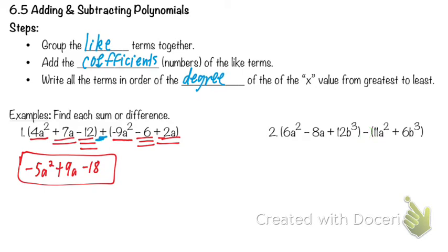There are a couple of different ways we can think about it, but before we do that, let's go through and underline. What's going to come first out of everything? We have 6a squared, negative 8a, 12b to the third, 11a squared, and 6b to the third. What's going to come first — a squareds or b to the thirds? A, because alphabetical. Even though b to the third has a higher exponent, we go alphabetical first. So 6a squared and 11a squared come first. Then negative 8a comes next, because it still has the a. And then last come 12b to the third and 6b to the third.